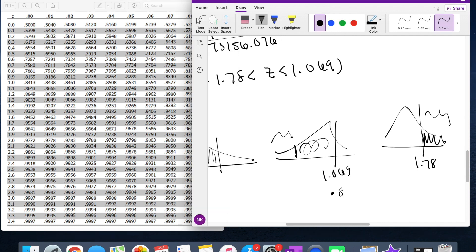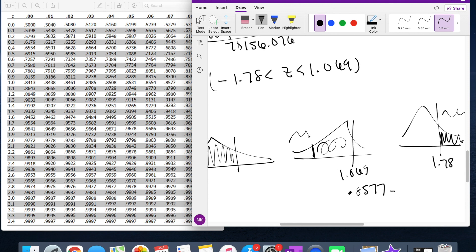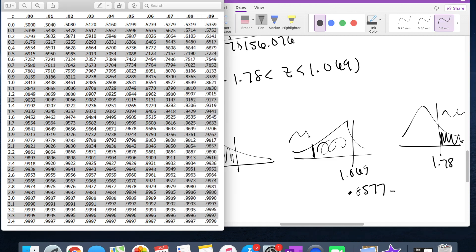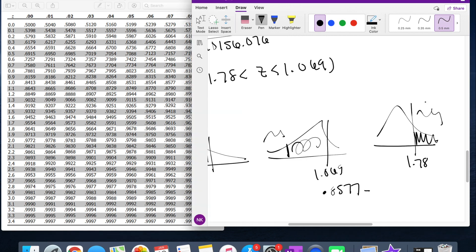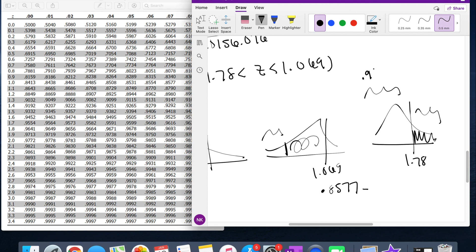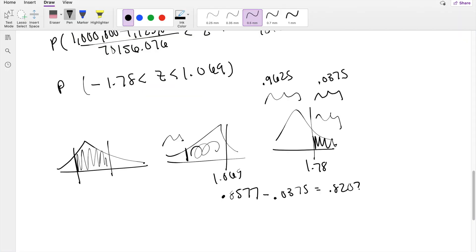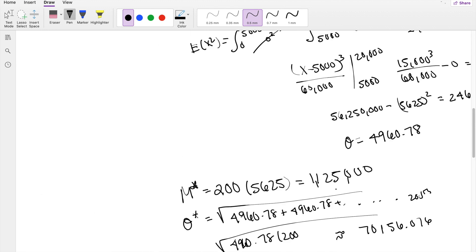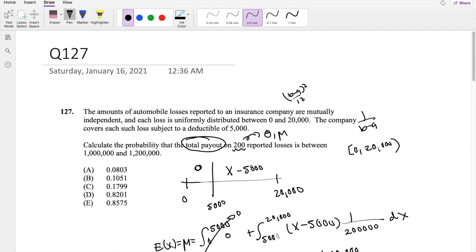At 1.069, that's 1.07, which is 0.8577 minus the lower limit, 1.78, which is 0.9625. But 0.9625 is this part, so this bit here is 1 minus 0.9625, which is 0.0375. Subtracting that, this equals 0.8202, which is answer D.